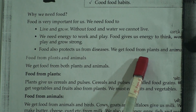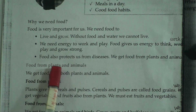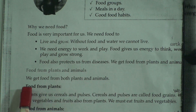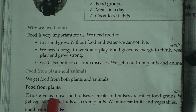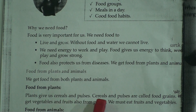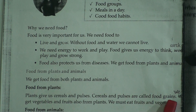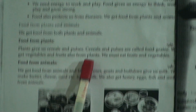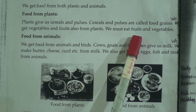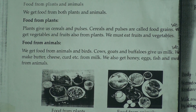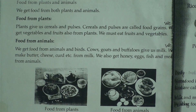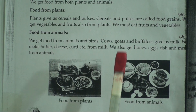We get food from both plants and animals. Plants give us cereals and pulses, which are called food grains. We get vegetables and fruits also from plants. We must eat fruits and vegetables. You know about different kinds of fruits like apple, banana, jackfruit, mango, and also different kinds of vegetables like potato, carrot, and ginger.